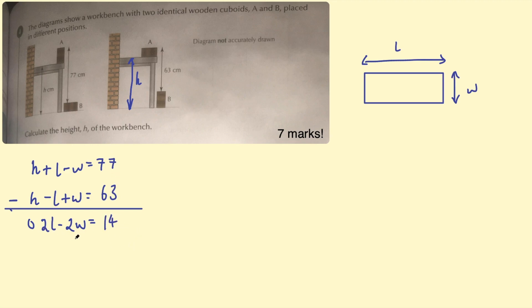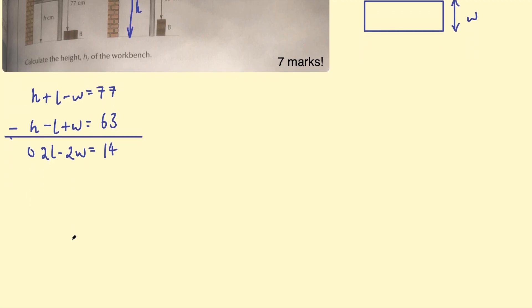Okay. So now we have two L take two W equals 14. If I divide through by two here, divide through by two by two, then two L divided by two is just L. Two W divided by two is just W. 14 divided by two is seven. And now we have this equation L take W equals seven.